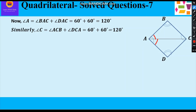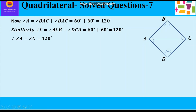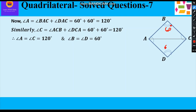Similarly, angle C also comprises two angles, ACB and DCA, so it is also equal to 60 + 60 = 120 degrees. We have seen that angle A = 120 degrees and angle B = angle D = 60 degrees. So the opposite angles of this quadrilateral are equal.